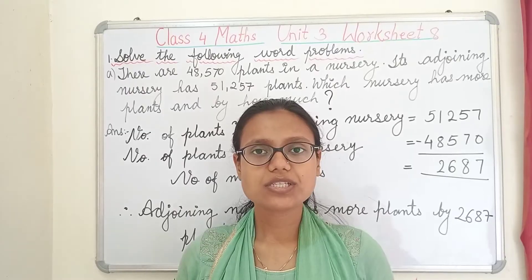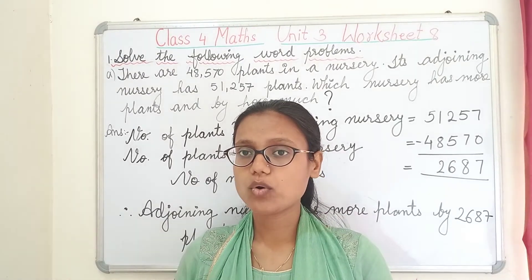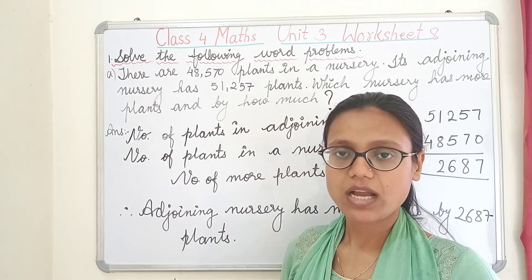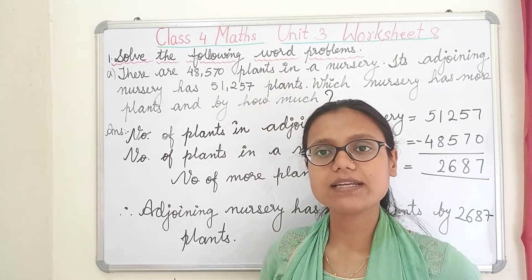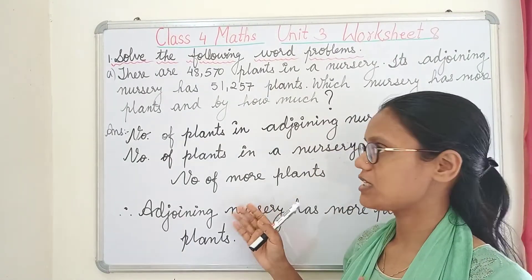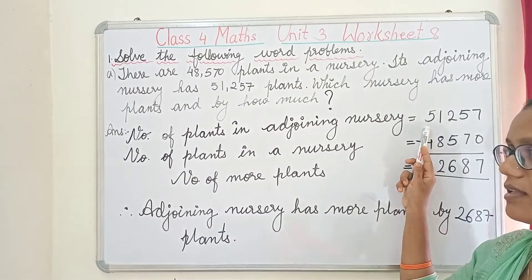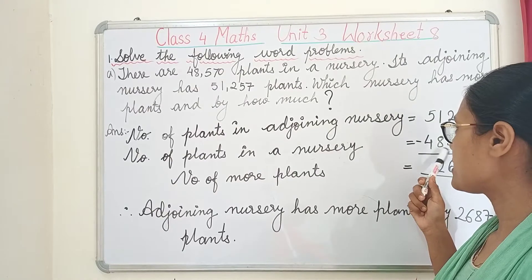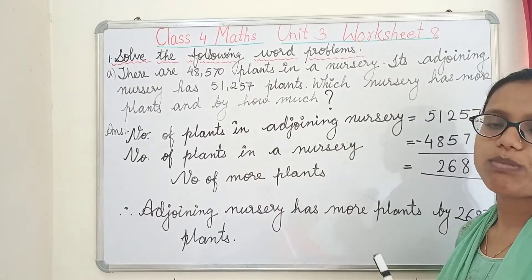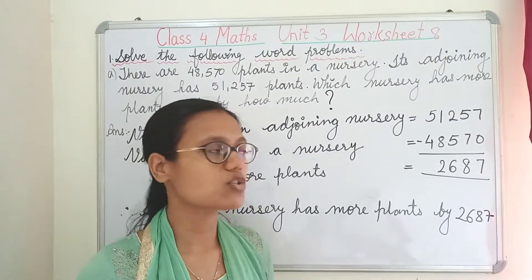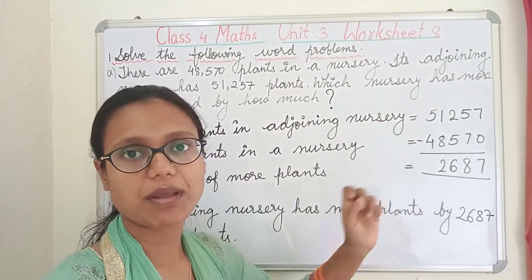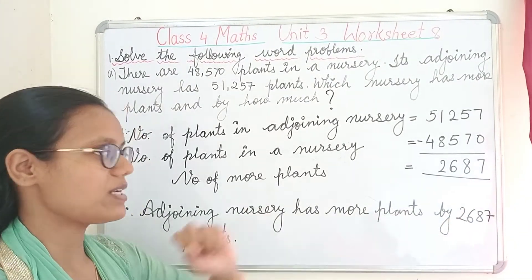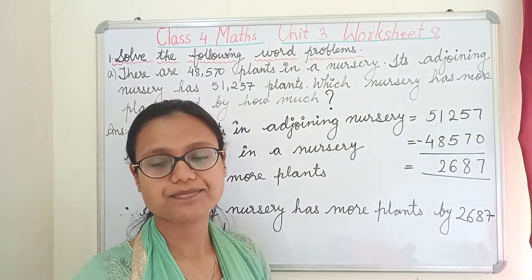Just by looking at the question you can tell which one has more plants — obviously the adjoining nursery has more. To find by how much, we subtract. The statement: number of plants in adjoining nursery minus number of plants in the first nursery (48,570). Therefore, the adjoining nursery has more plants by 2,627 plants.